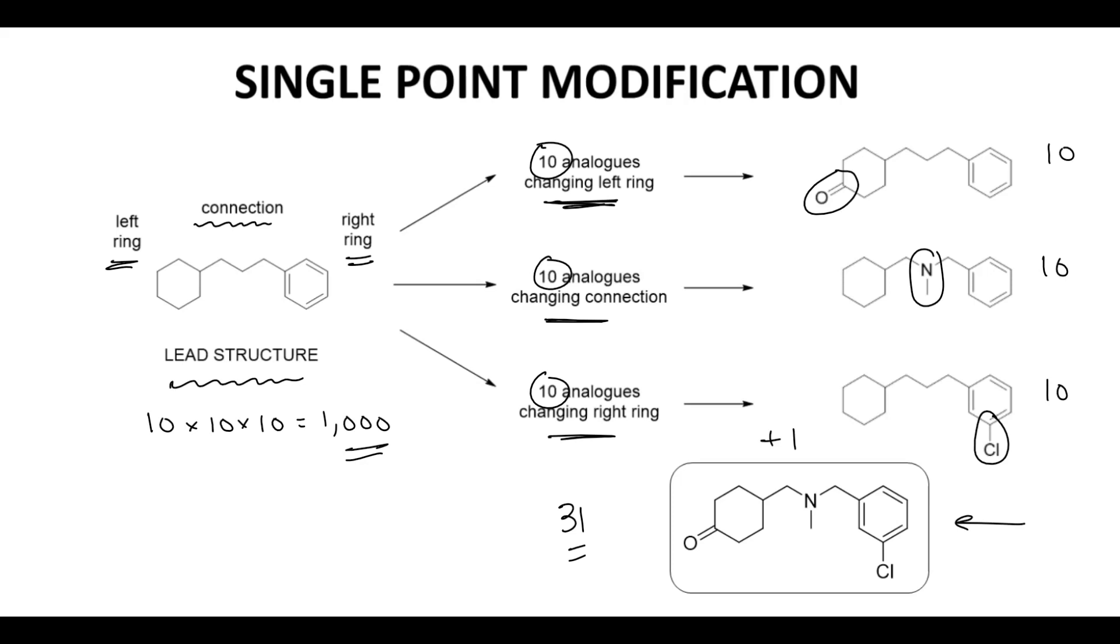The single point modification approach assumes that changes to one side of the molecule have no impact on the other side of the molecule. This assumption is not always true. Slight shifts in the position of one side will affect the positioning of the other side. These interactions are, in fact, not independent.